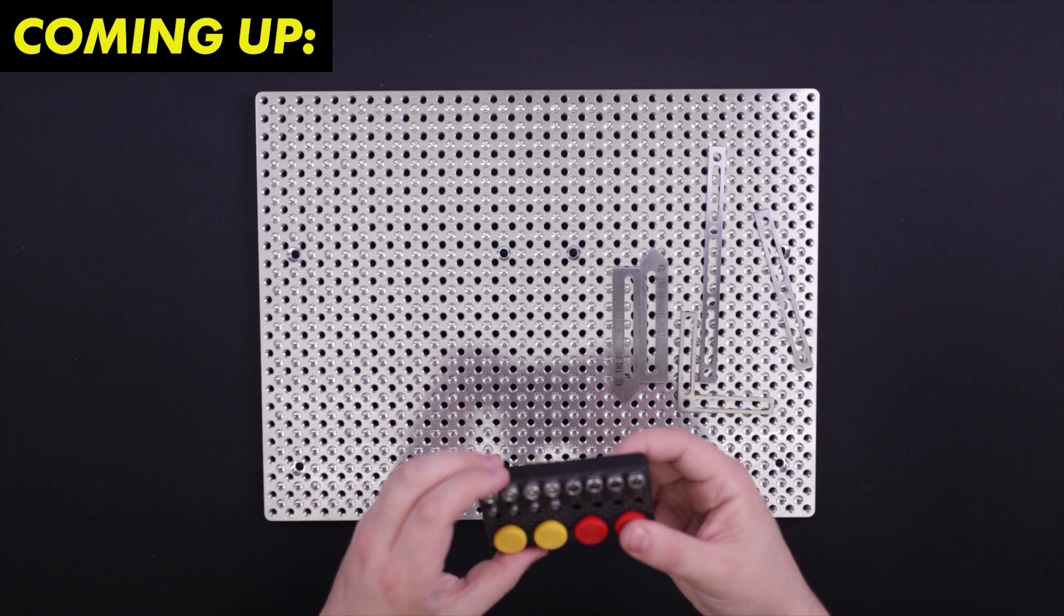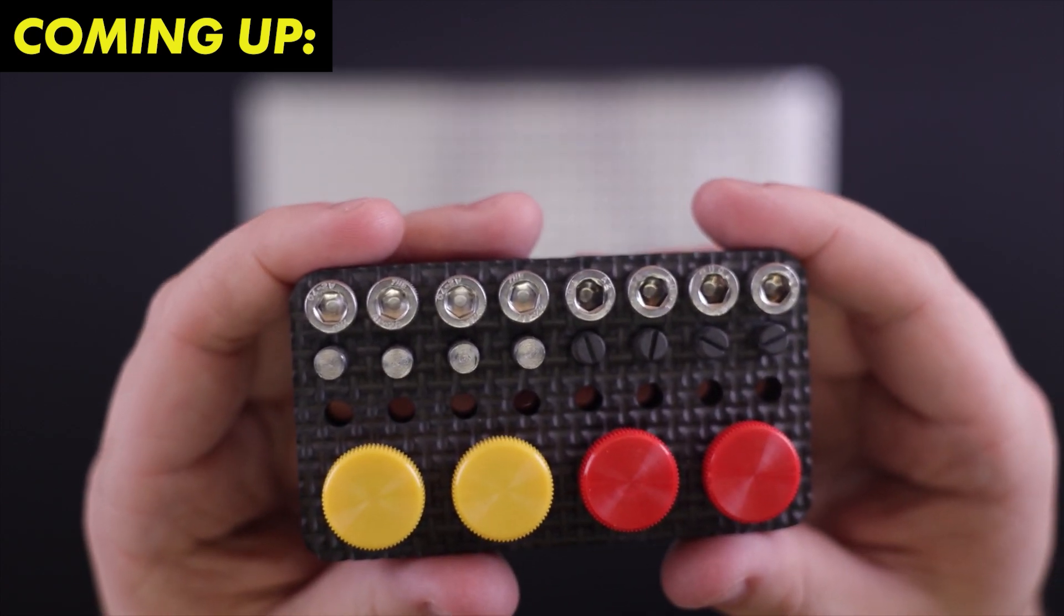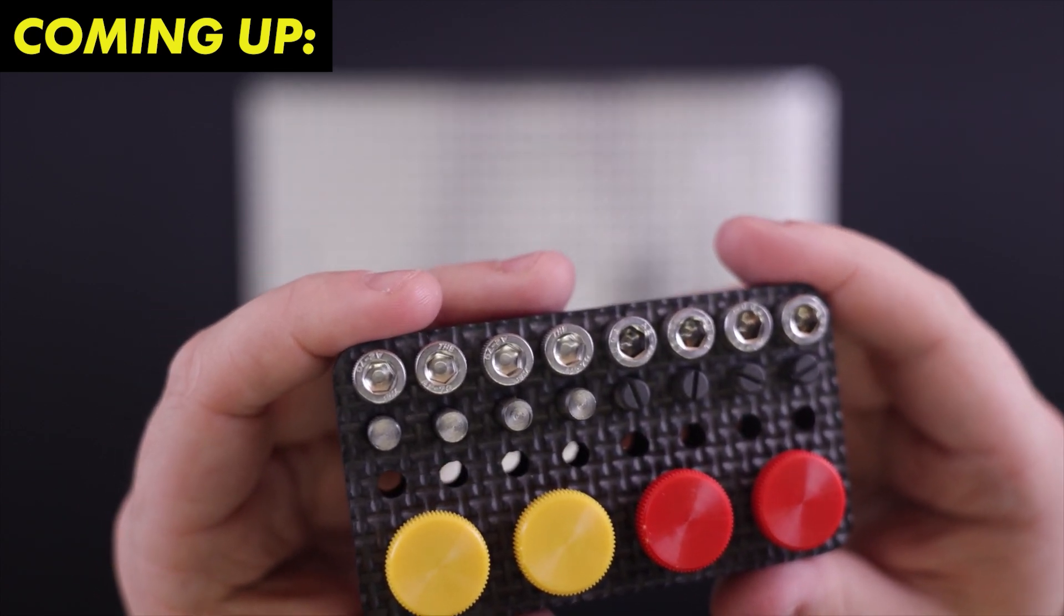Even the machine screws that come in the accessory kit have logos on them. Like you know that you're buying good screws when the screws have logos engraved into them.